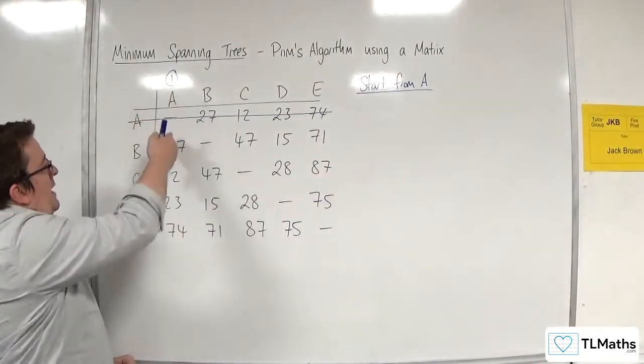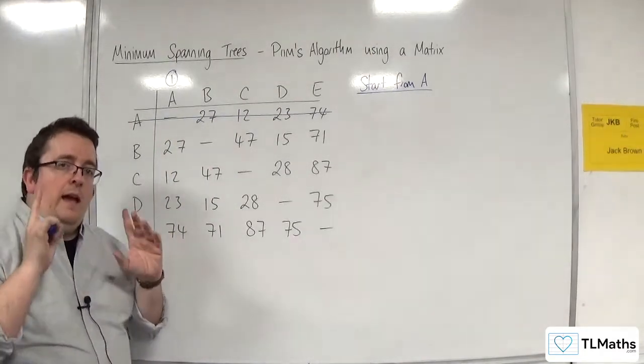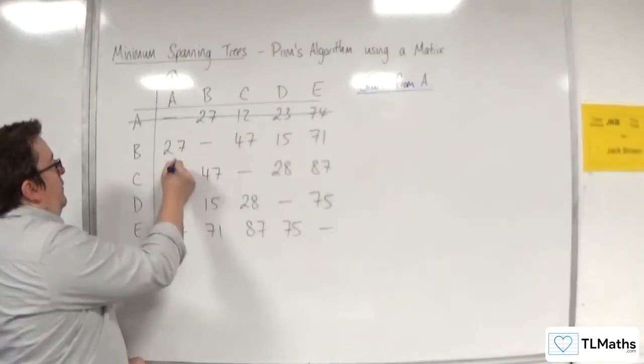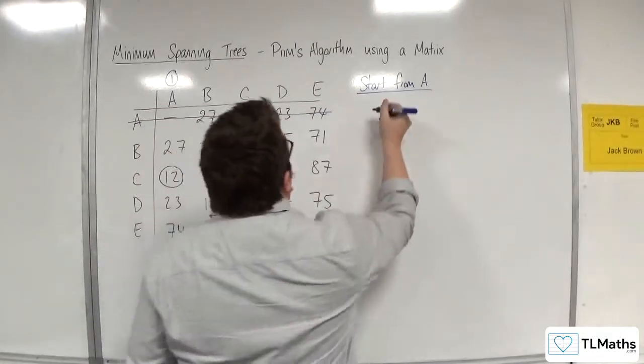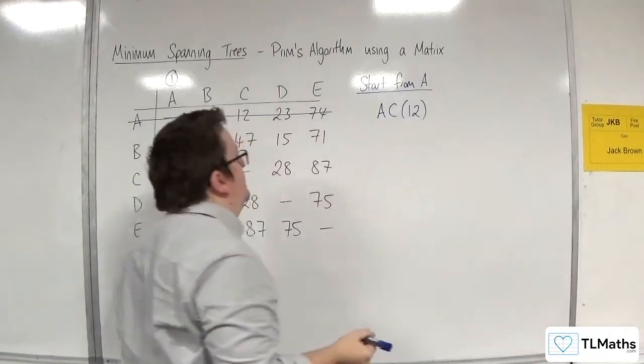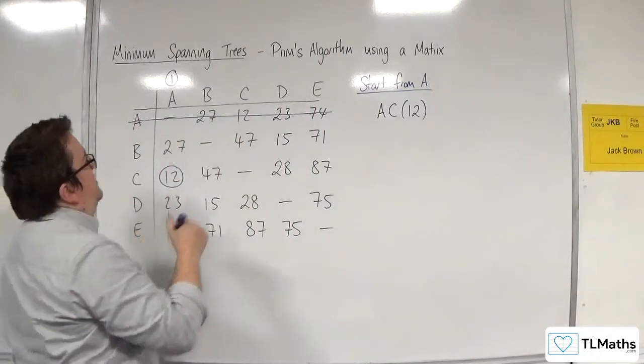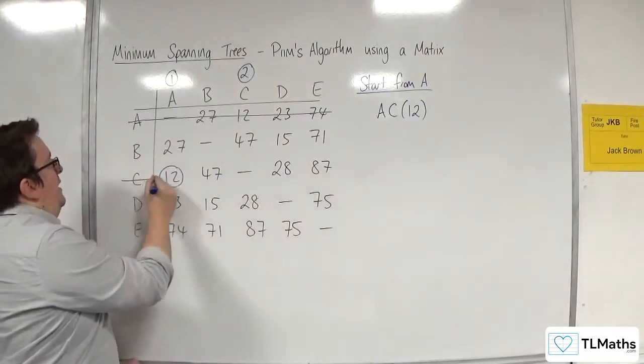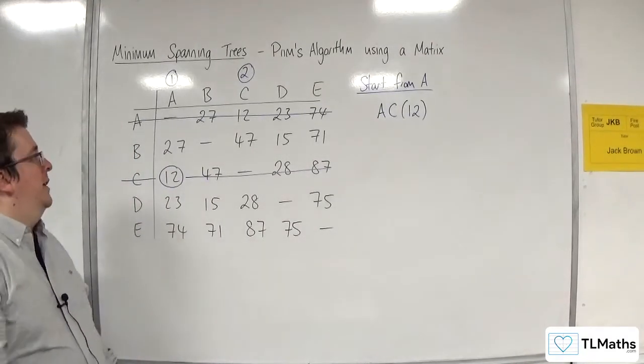We look down column A and we select the one of least weight. And so that is 12. So I've now connected A to C and I write that down. That is the first edge I am selecting. Once I've connected C, I put a number 2 at the top of C and you delete the rest of the row and that stops cycles occurring.